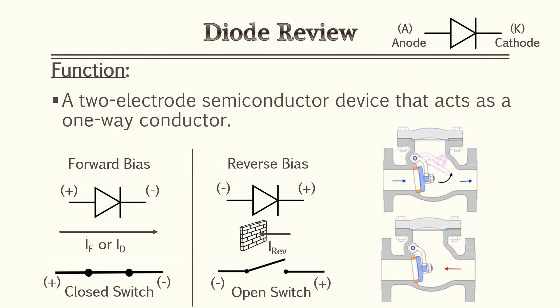For this lesson we'll be going over junction diodes. A junction diode is a two-electrode semiconductor device that acts as a one-way conductor — in a sense, a check valve of the electrical world. When current is flowing through the diode it's in forward bias. If current is trying to flow the opposite direction it acts as an open, and that would be reverse bias.